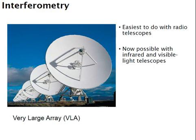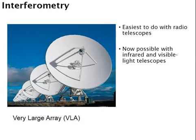This is easy to do with radio telescopes — you just put multiple dishes up. For infrared and visible light telescopes, it's not as simple; you have to do a lot of image processing, but you can do it now. Combining several different measurements together to make your observation better is getting to be a more common thing.